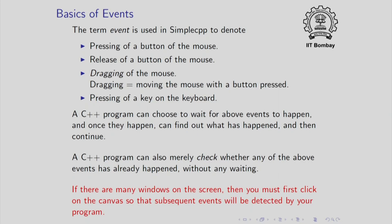Now, if you have several windows on the screen, you may be interacting with different windows. So if you press a mouse button, that event may go to one of those windows — you do not know which one. If you click on a certain window, then that window is set to get the focus, and subsequent mouse events or keyboard events will be sent to the program running in that window. When we talk about events like the ones listed here, we are assuming that your canvas has the focus.